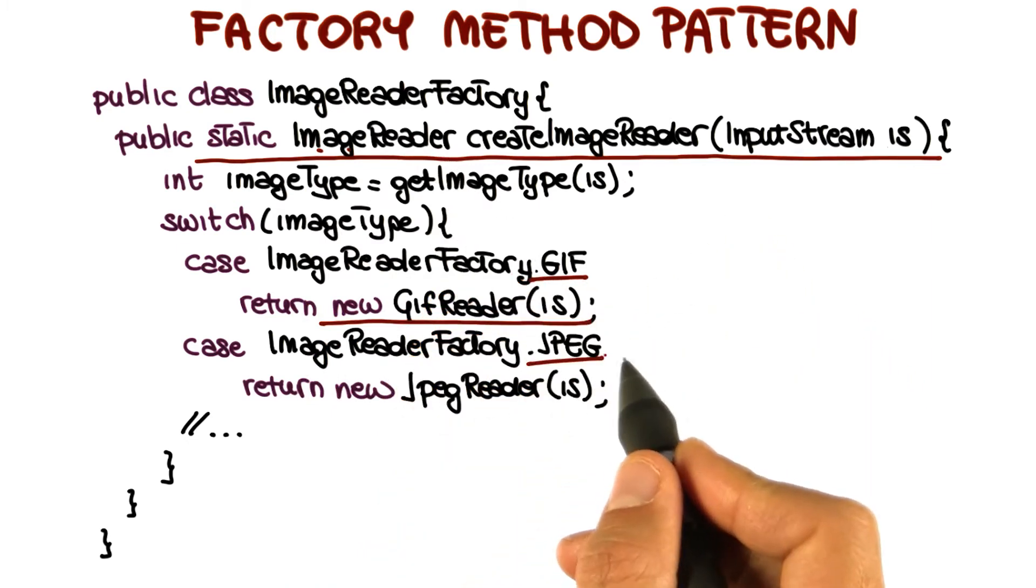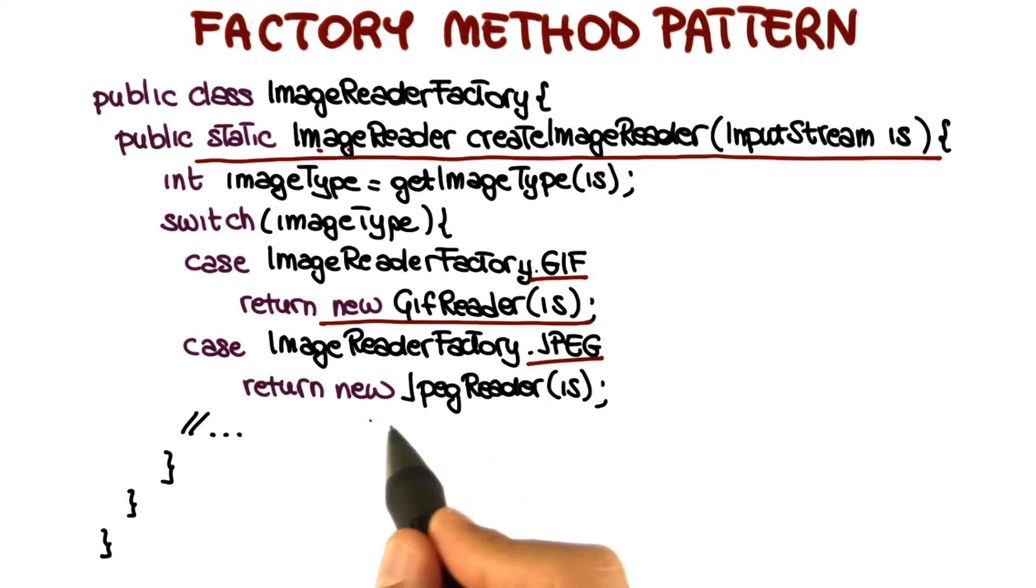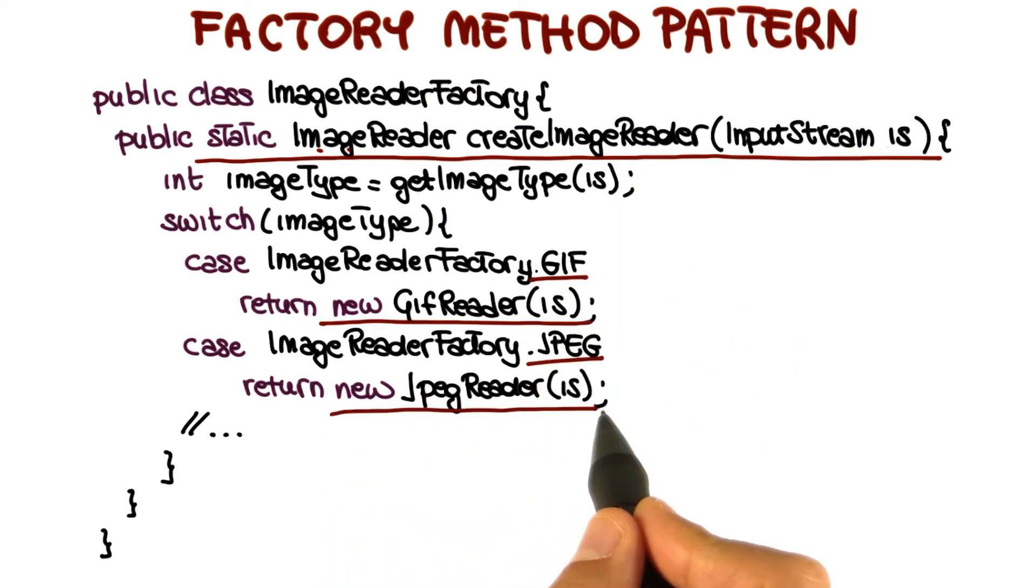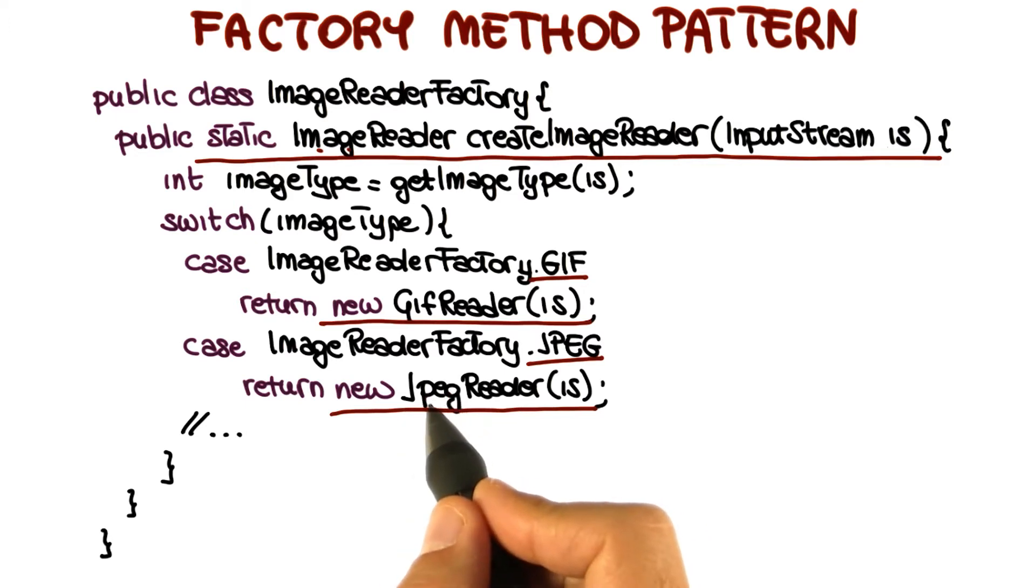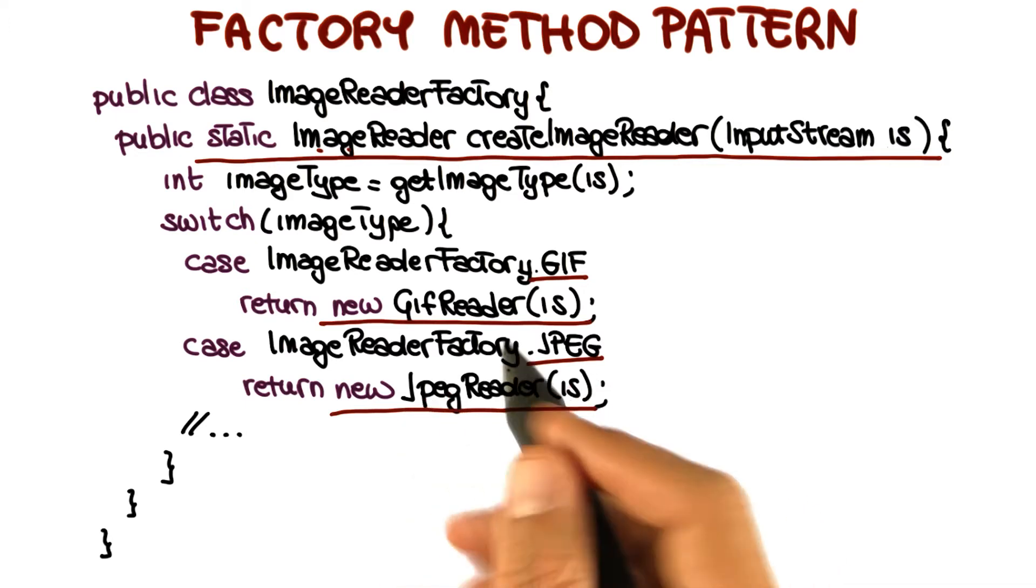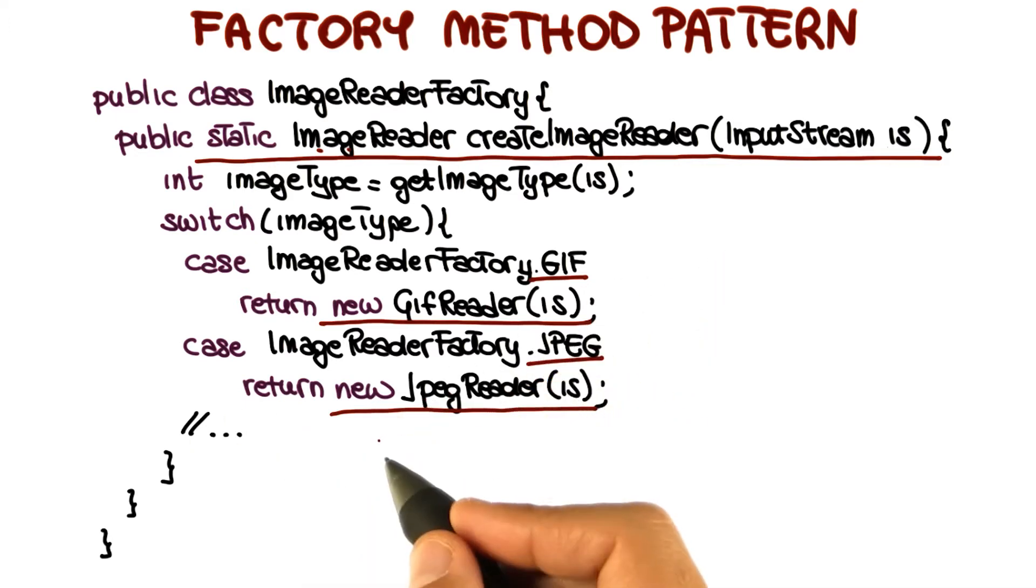Similarly, if the imageType is JPEG, the method will invoke the constructor for JPEGReader. This constructor will read from the stream a JPEG, create a corresponding object, and return it. And so on for different types of images.